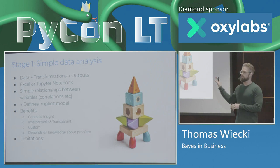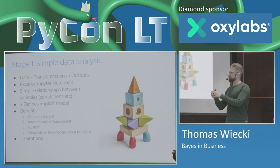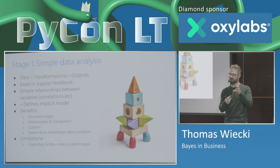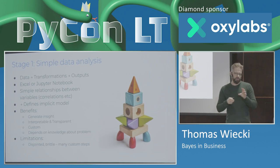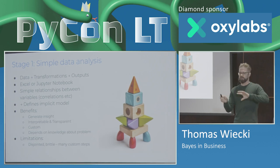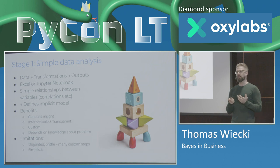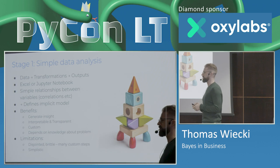I illustrated this with an analogy: let's say our goal is to build a rocket — these are basically simple wooden blocks that you just stack on top of each other. It's a little bit disjointed; each piece doesn't necessarily work well with the other parts of the analysis. That makes it a little bit brittle — it's all just these different cells that somehow interact with each other, and there are many custom steps involved. Also the type of analysis we can do is very simplistic.